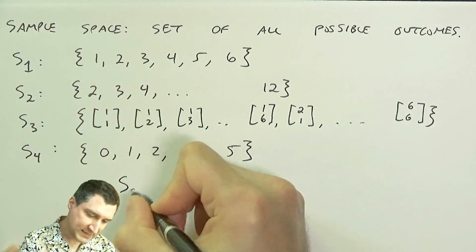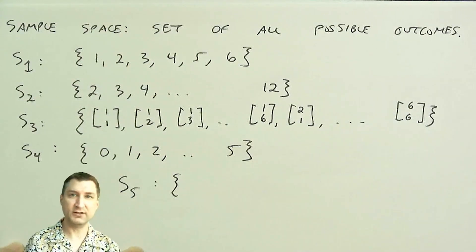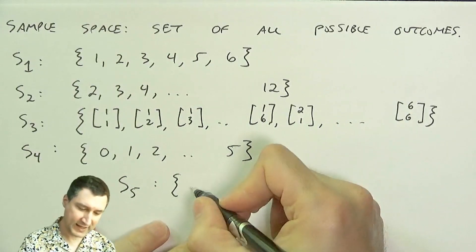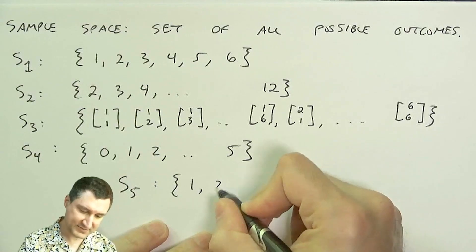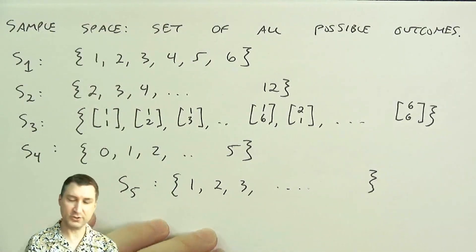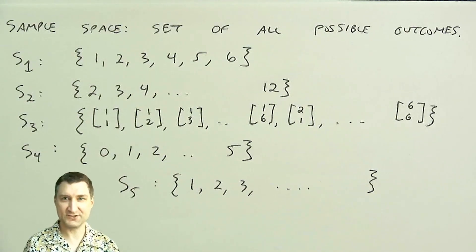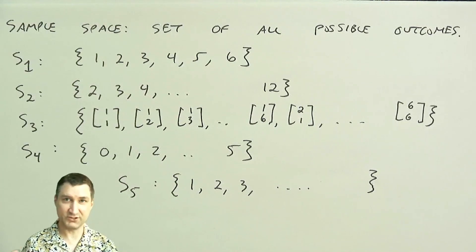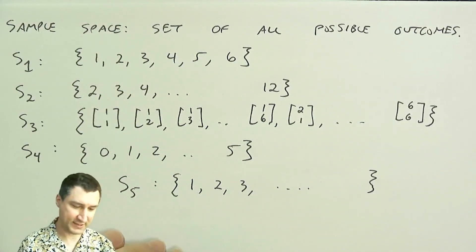The next thing I talked about was keep flipping the coin until I see a head, and record the flip where I got the head, right? So I could have seen the head on the first flip, the second flip, the third flip. And actually, there's basically no end point to this set, right? So this is a case of a discrete sample space with infinitely many outcomes, because there's no upper limit to how many flips it might take to see the head.